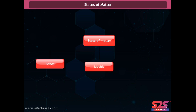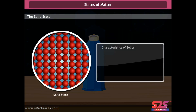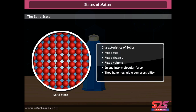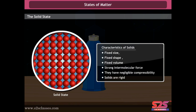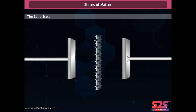States of matter: on the basis of physical properties, matter is classified into three states — solids, liquids, and gaseous states. Characteristics of solids: they have a fixed size, fixed shape, fixed volume, and strong intermolecular force. They have negligible compressibility due to very little intermolecular space between constituent particles. Hence they maintain their shape when subjected to external force — solids are rigid and resist a change in their shape.